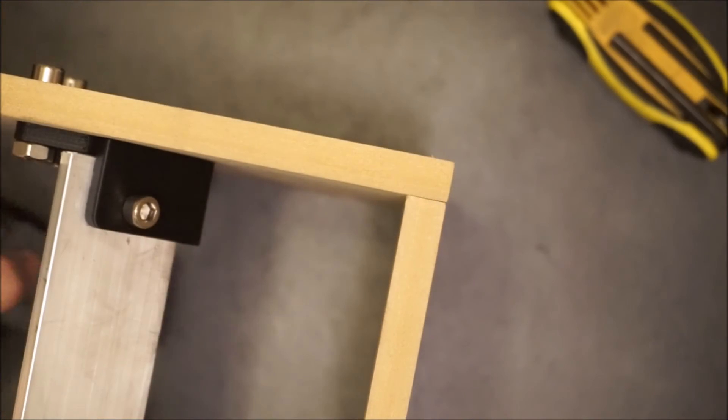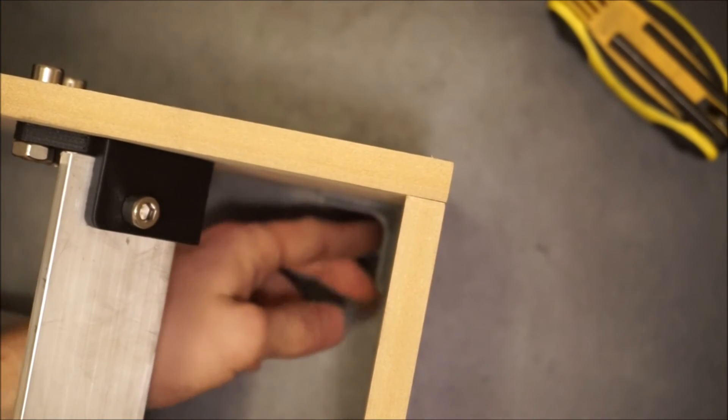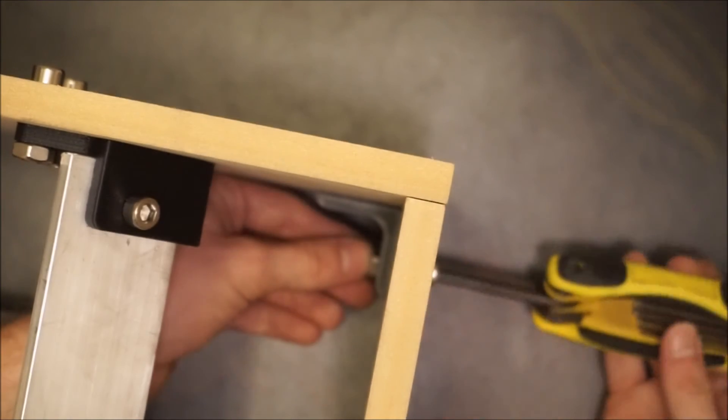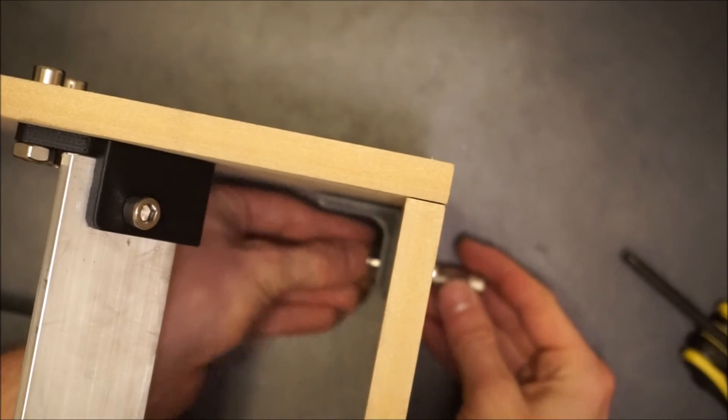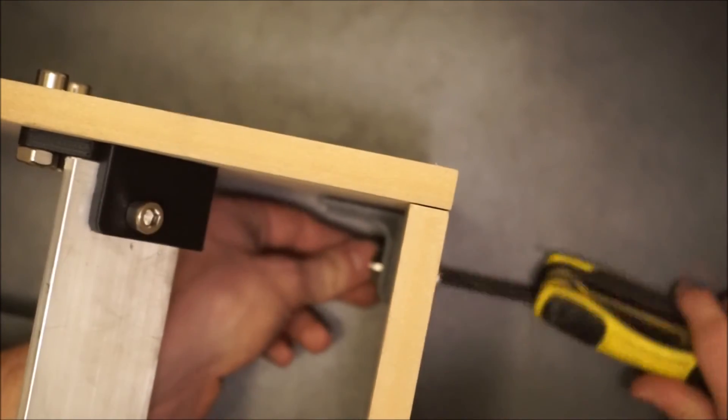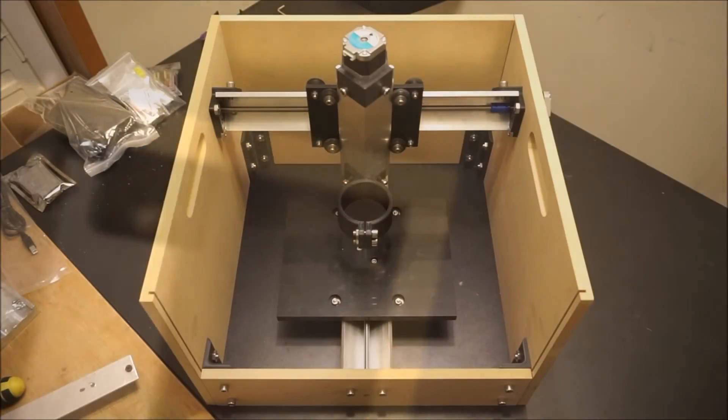Once again all bolts and corner angles should be loosely fitting to start. Once the frame pieces are all flat with your work surface you may begin to go around and tighten all of the bolts. This will ensure that dust doesn't leak out of the bottom of your machine as it's running.